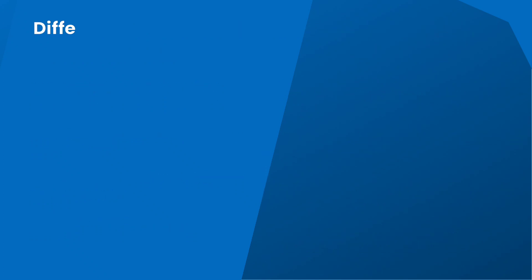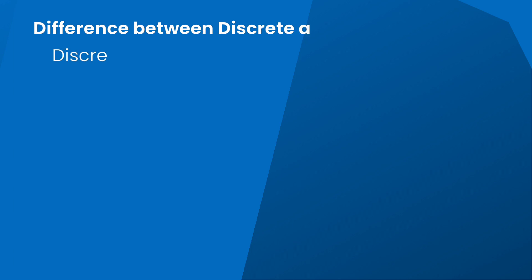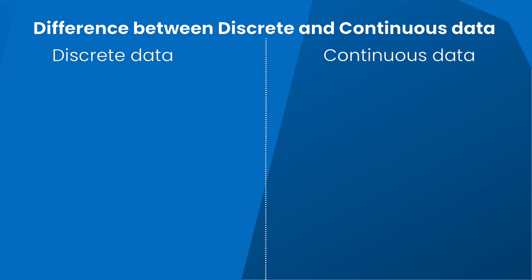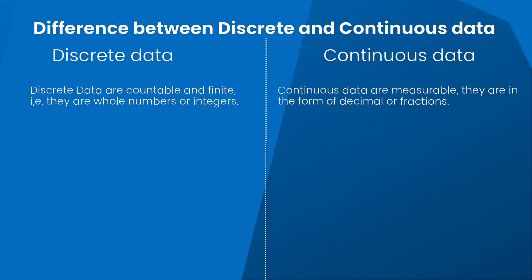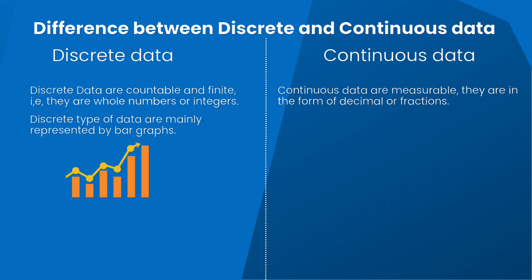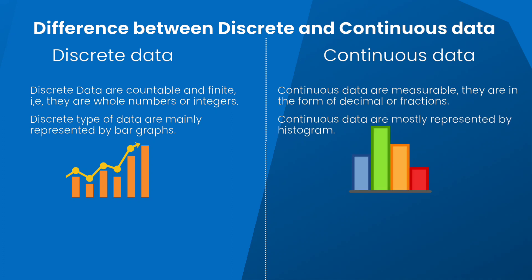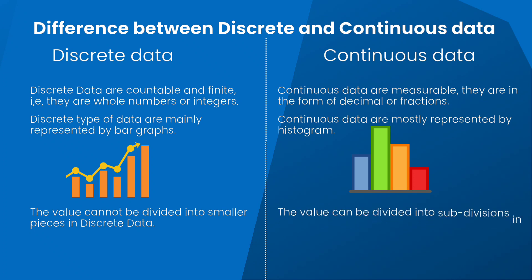Now let's see the difference between discrete and continuous data. Discrete data are countable and finite — they are whole numbers or integers — whereas continuous data are measurable and in the form of decimals or fractions. Discrete data are mainly represented by bar graphs, whereas continuous data are mostly represented using histograms. The value of discrete data cannot be divided into smaller pieces, whereas continuous data can be subdivided.